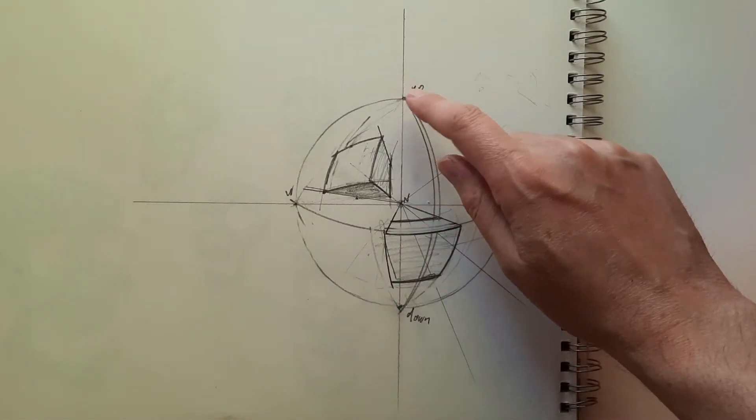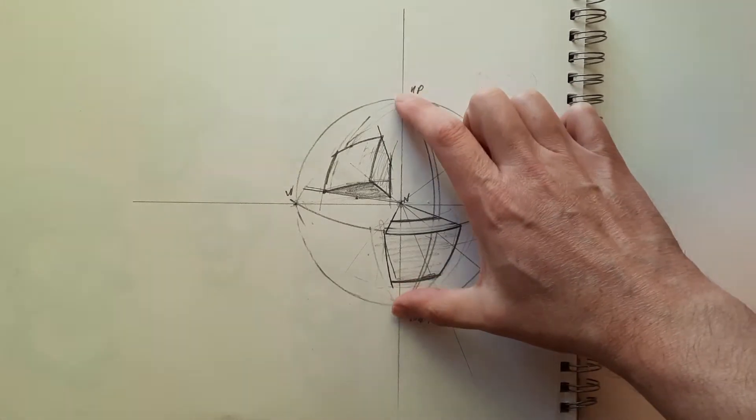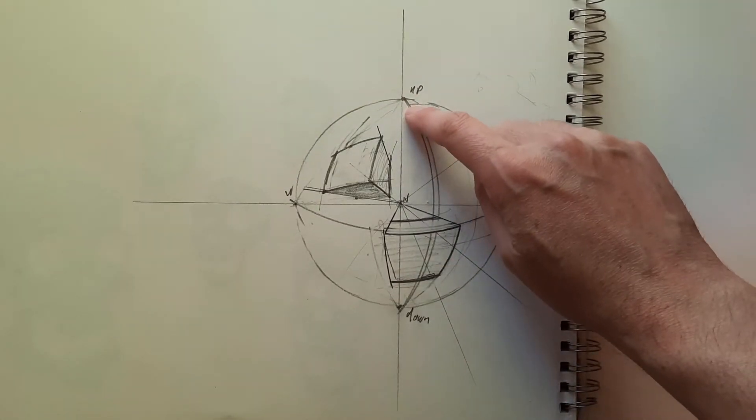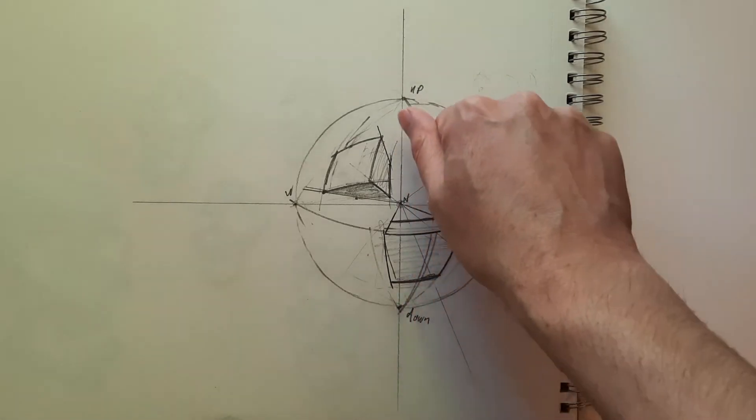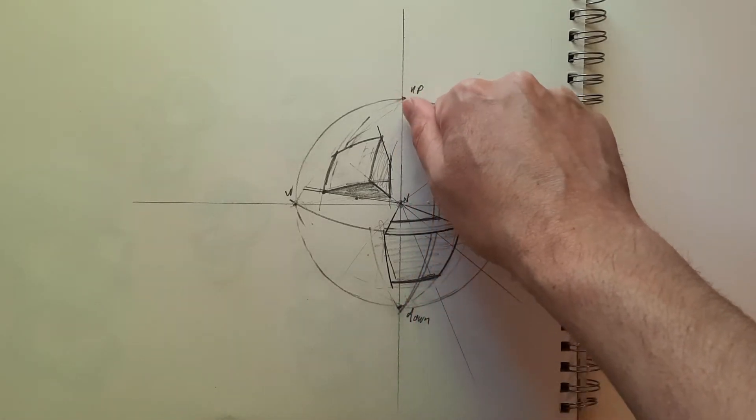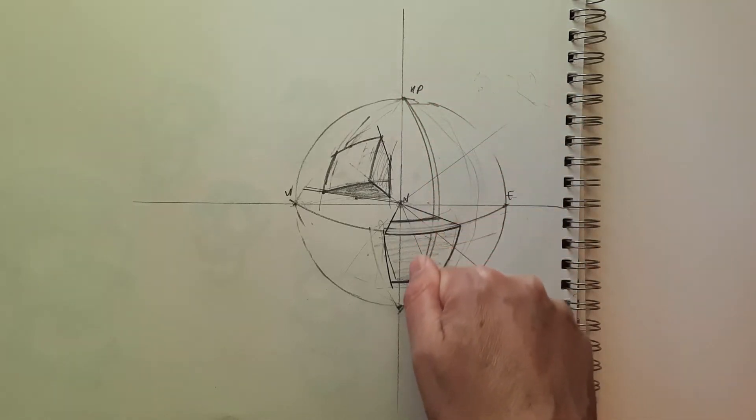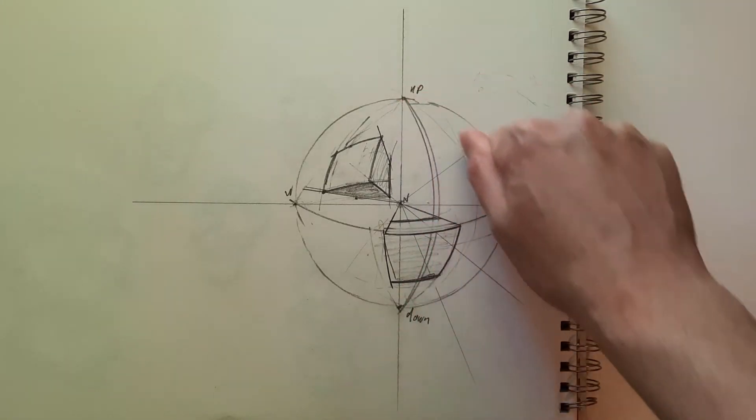In curvilinear perspective, our vanishing points can operate in pairs. This vanishing point is up, this is down, and lines that go up and down will curve between the up and down vanishing points.